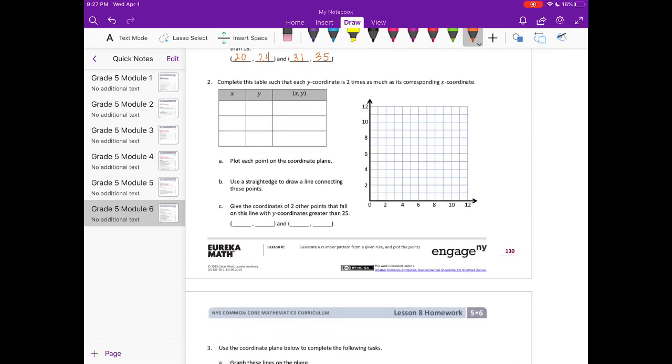Number 2. Complete this table such that each y-coordinate is 2 times as much as the corresponding x-coordinate. So this time the y-coordinate is 2 times, so we're doing times 2. Let's do 1, so 1 times 2, my y is 2.